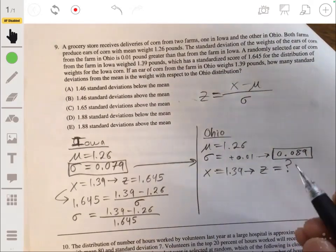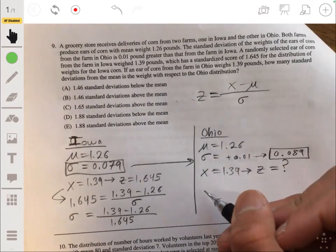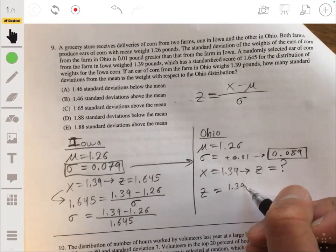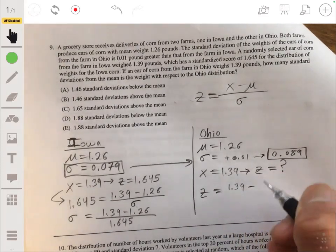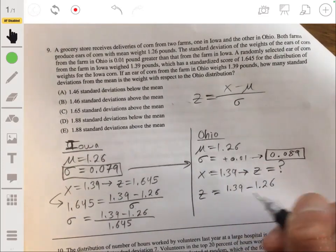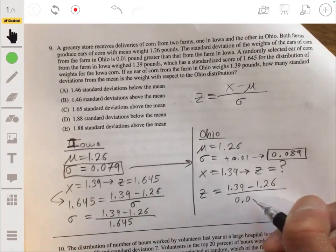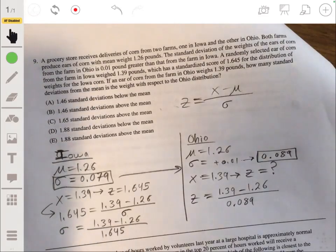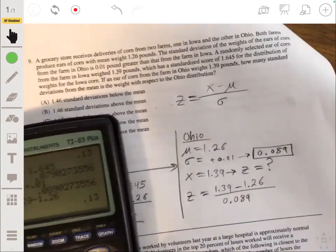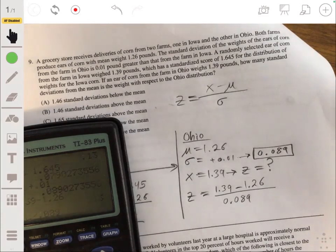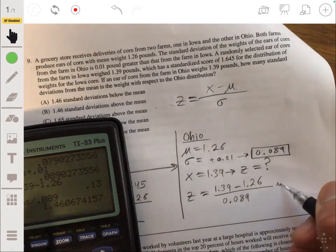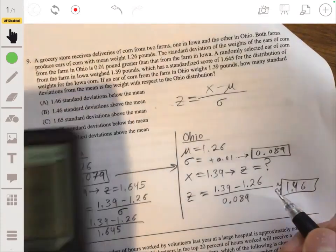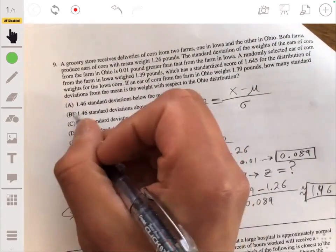Now remember the Ohio standard deviation is 0.01 more than this one. So add 0.01 and we'll get 0.089 as the standard deviation. Okay, so now we can find the Z score by plugging these values in. Z will be 1.39 minus the mean 1.26 divided by 0.089. We'll get about 1.46 standard deviations. And so the answer will be B.